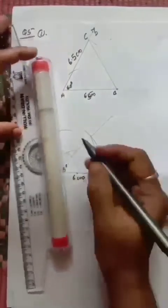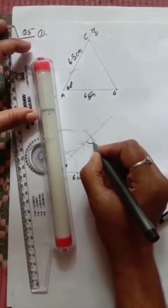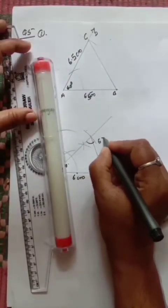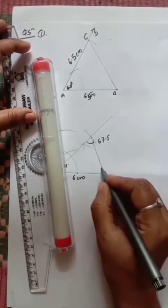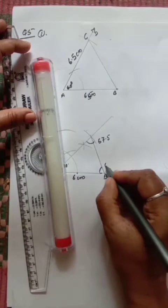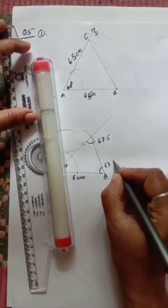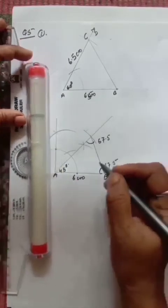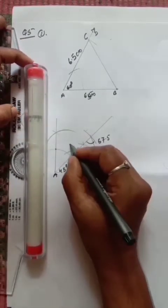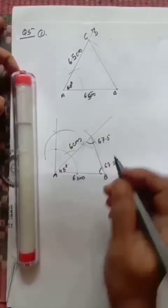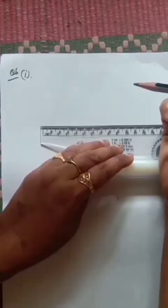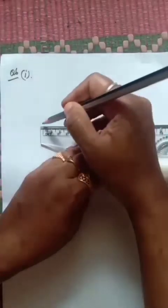Measure the base angles — you will get 67.5° each, because vertex angle is 45° and the two base angles are equal.